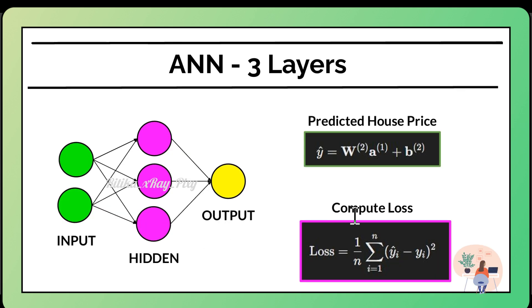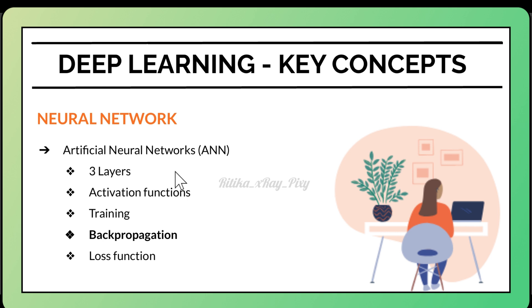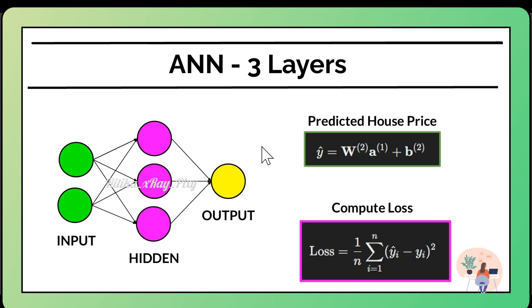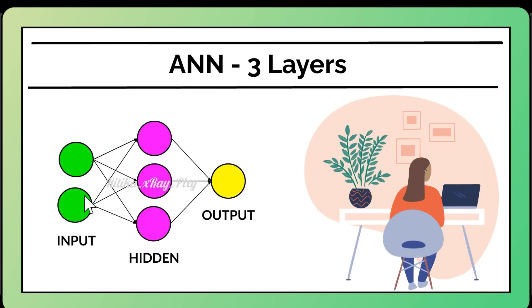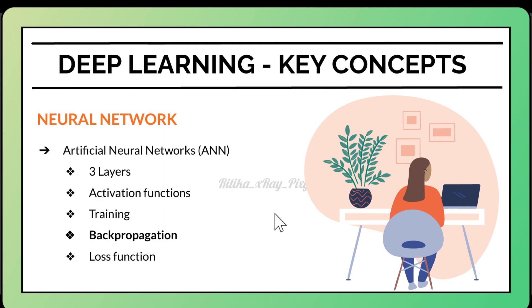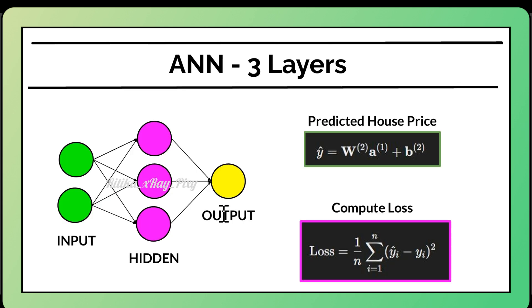For back propagation, we compute the loss using a loss function to measure the difference between predicted and actual prices. We can use mean squared error for the regression task. This simple example shows how data is processed between the three layers. After forward propagation, we perform back propagation: compute the loss, calculate the gradients, update the weights, then start training for multiple epochs.